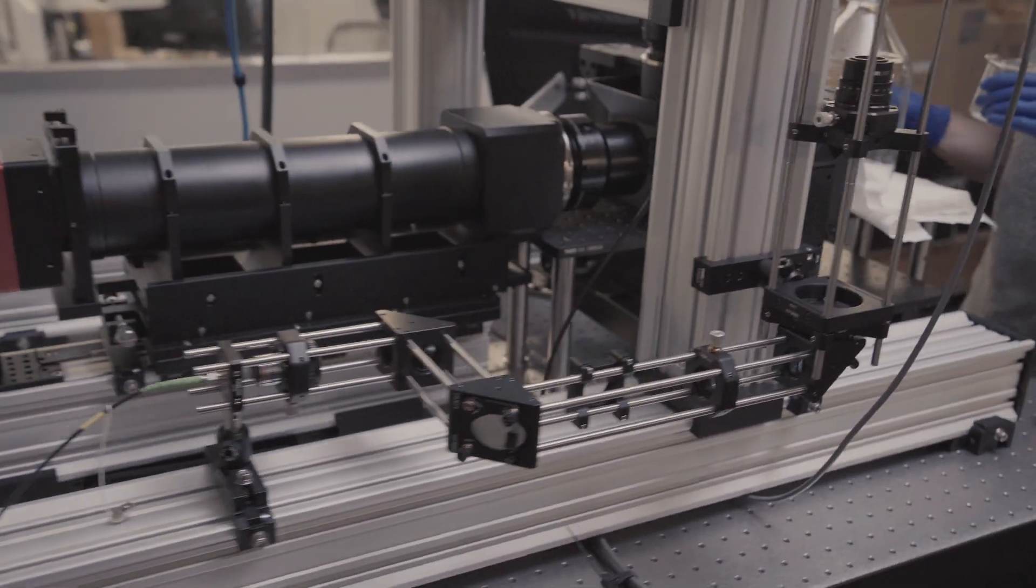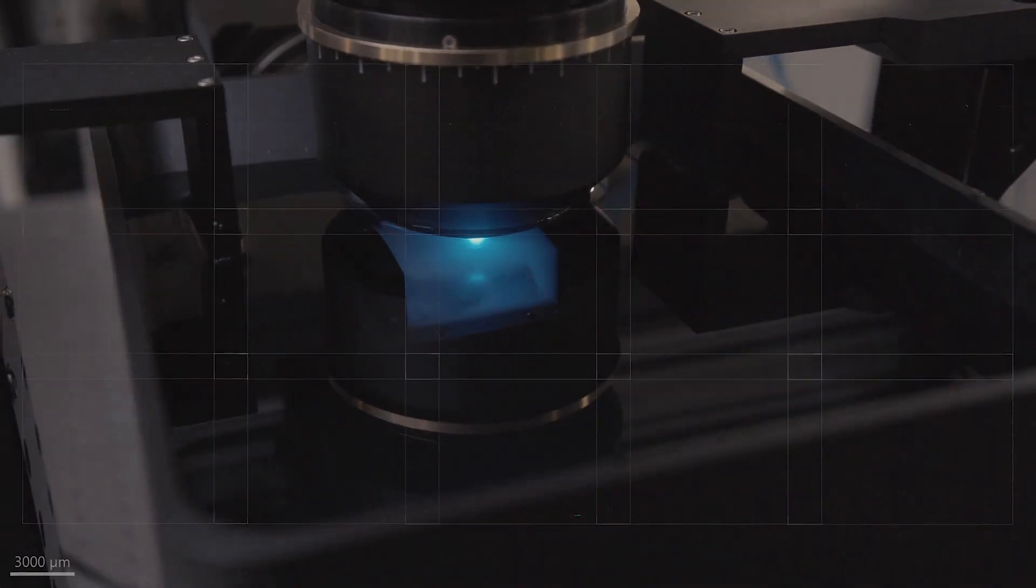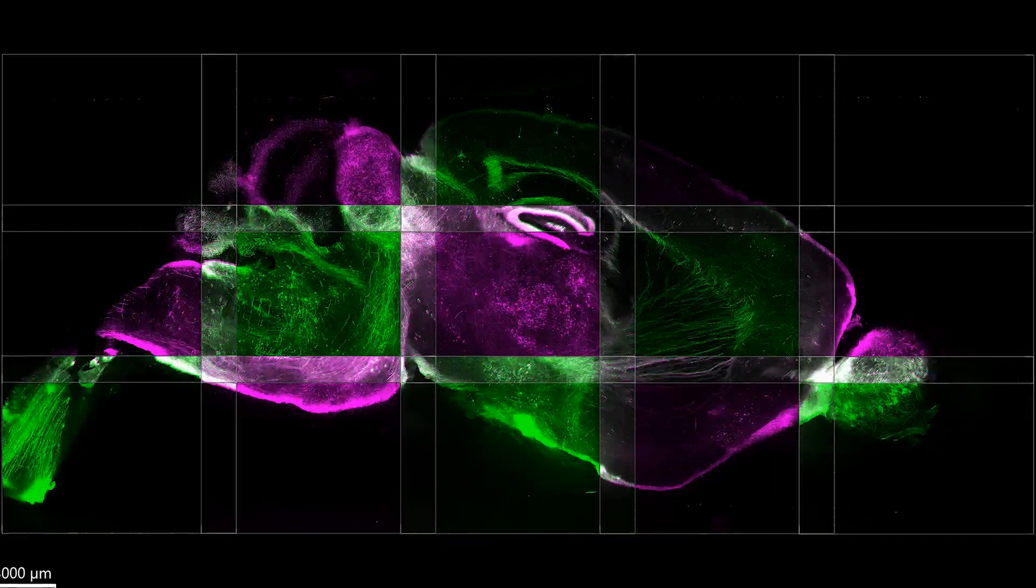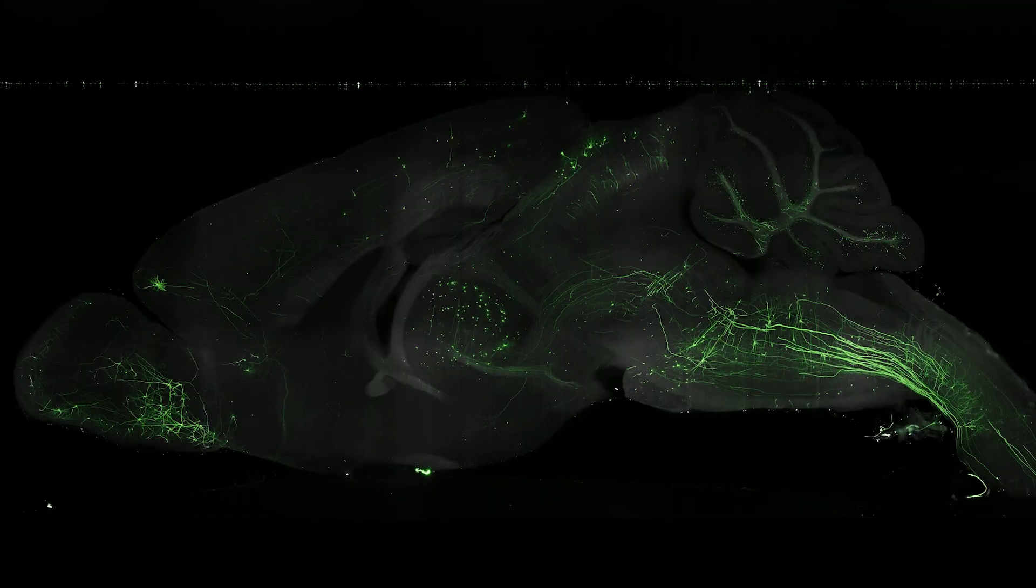This microscope is known as a light sheet microscope and basically we use a laser and a number of lenses to shape that laser light into a thin sheet and it excites dye molecules which then fluoresce at certain places within the brain.